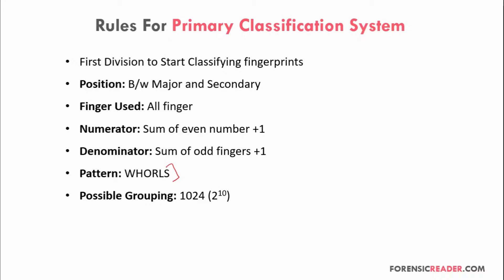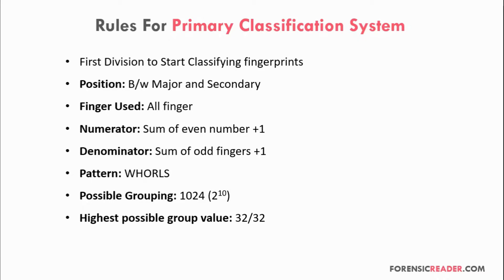The possible grouping is 1024, that is 2 to the power of 10. This is because for each fingerprint there are two possibilities — it could be a whorl or it could not be a whorl — and there are 10 digits, so the value is 2 to the power of 10. The highest possible value group is 32/32, where all fingers have whorls, and the lowest possible group value is 1/1, meaning none of the fingers has a whorl pattern.